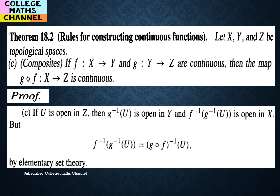This is from James R. Munkres' book. Simple rules for constructing continuous functions: the composition of two continuous functions f and g is also continuous. To summarize: U open in Z implies g-composite-f inverse of U is open in X, so g-composite-f from X to Z is continuous.